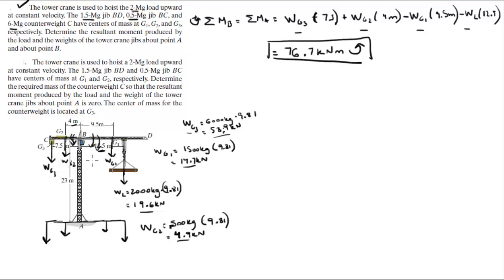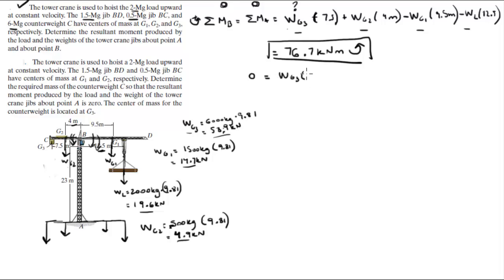For the second problem, we don't know wg3. They're asking: if you want to balance the whole assembly, how much mass should the balancing weight g3 have? To balance it, the moments at a or b must equal zero. So we plug values into the formula: zero equals wg3 (unknown) times 7.5 —